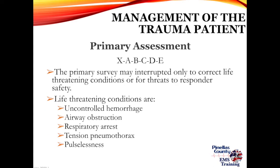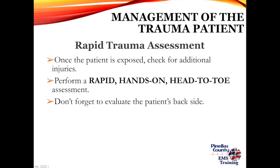The primary survey may only be interrupted to correct life-threatening conditions — uncontrolled hemorrhage, airway obstruction, respiratory arrest, tension pneumo, and pulselessness — or for threats to responder safety. After exposure, check for additional injuries with a rapid, hands-on head-to-toe scan. This is not your detailed assessment, just a rapid check for other life-threatening injuries to determine severity. And don't forget to evaluate the patient's back — this might be a good time to place a backboard if warranted, making sure you're not missing injuries to the backside.